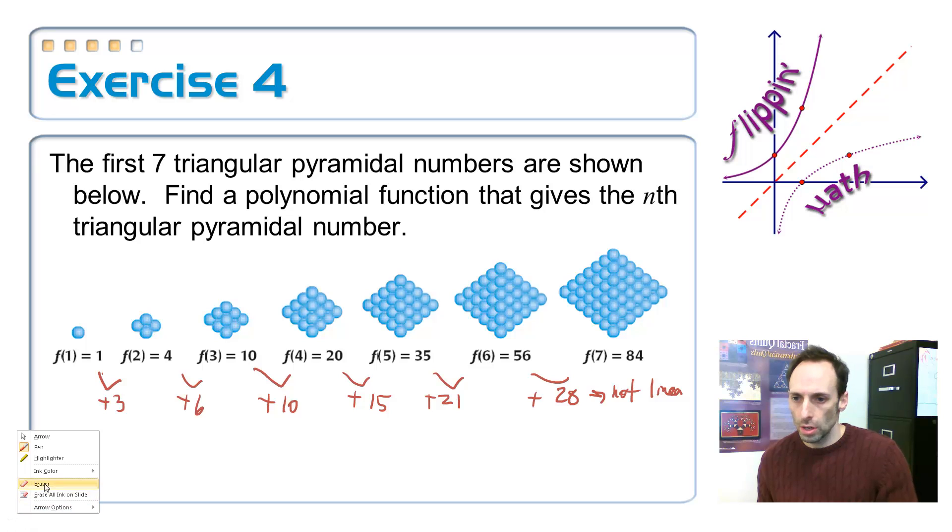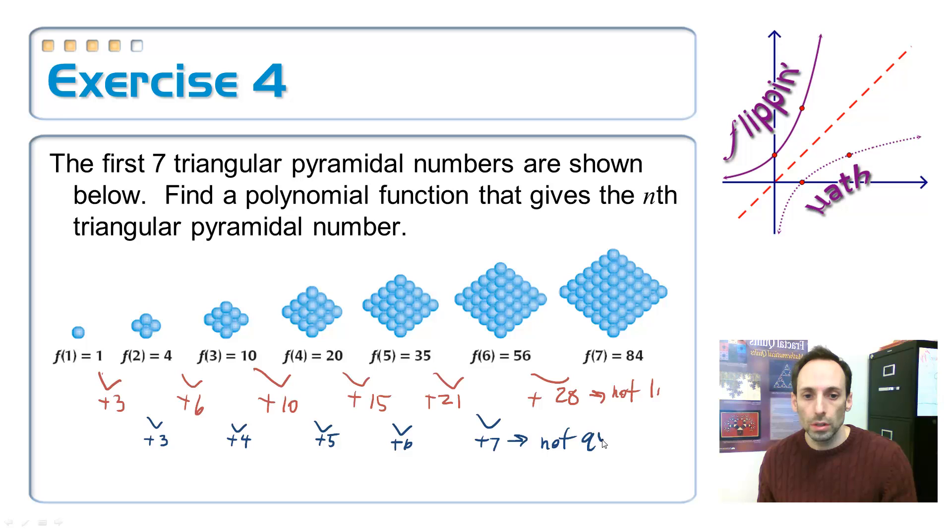Now let's see what the differences between those differences are. This goes up by 3, by 4, by 5, by 6, and by 7. Since those aren't the same, this means it's not quadratic.